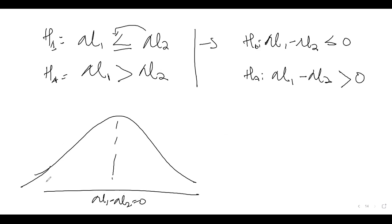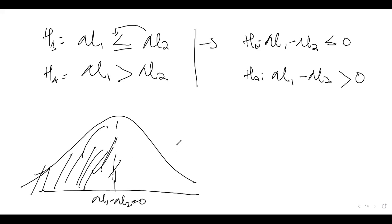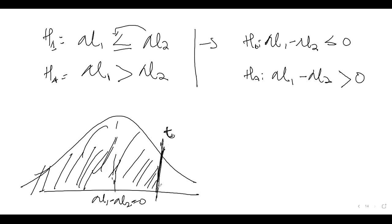We draw the curve based on the null, so group one minus group two equals zero. The null says it should be less, so everything to the left is the acceptance region — we allow for a little more — and we need to determine the t value to know the critical bound. Everything to the right is the rejection region.